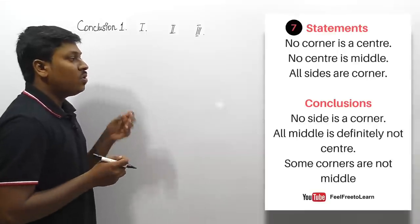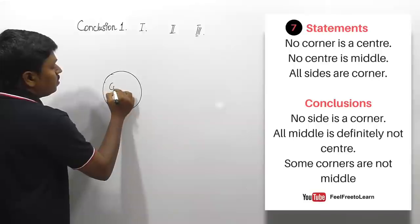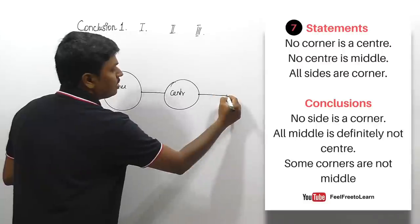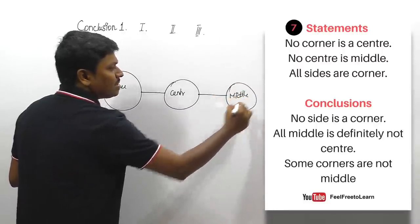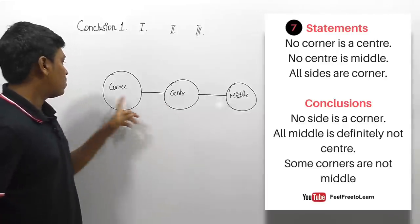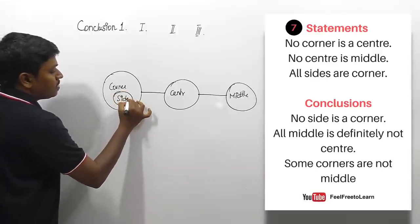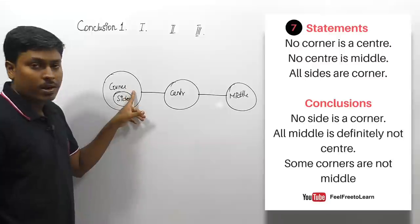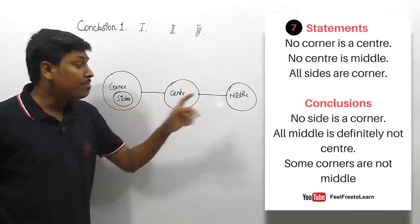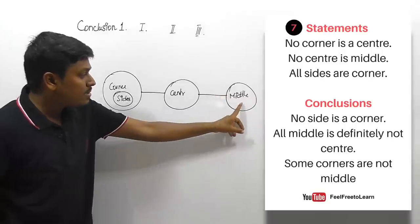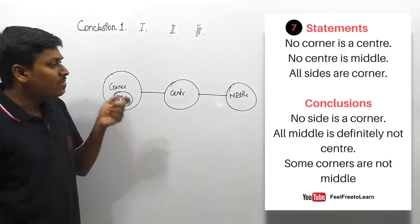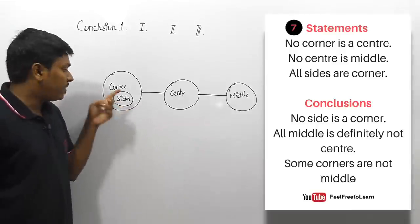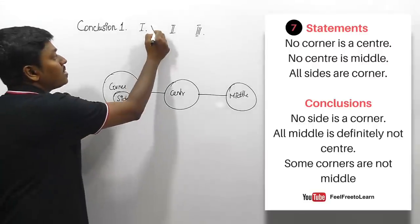Next question. Statements: 'no corner is a center,' 'no center is middle,' and 'all sides are corners.' After drawing the Venn diagram: there is no possible connection between center and corner, and no possible connection between center and middle, but there is a possible connection between middle and corner, middle and sides. Conclusion one: 'no side is a corner' — side and corners are inside a single Venn diagram, so 'no' conclusion does not follow.